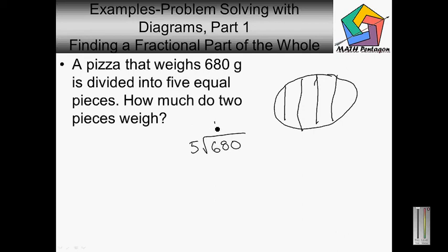Five goes into six one time. Six minus five is one, drop down to eight. Five goes into eighteen three times. Five times three is fifteen. Eighteen minus fifteen is three, drop down to zero. Five goes into thirty six times.